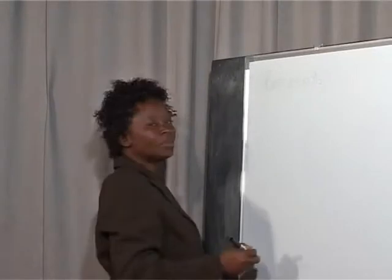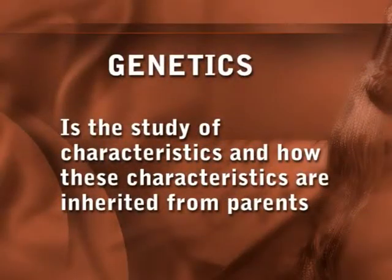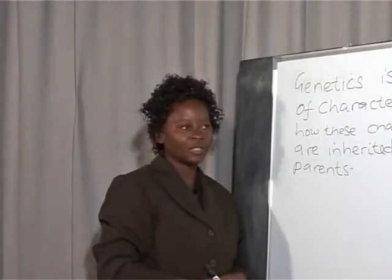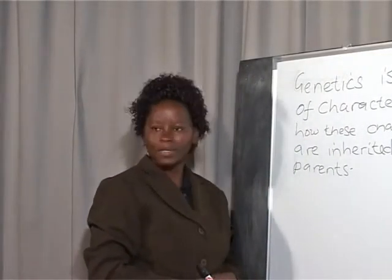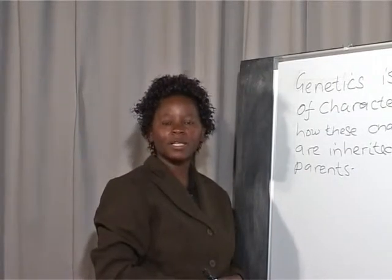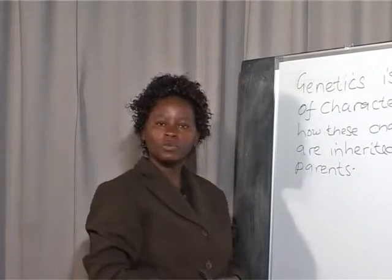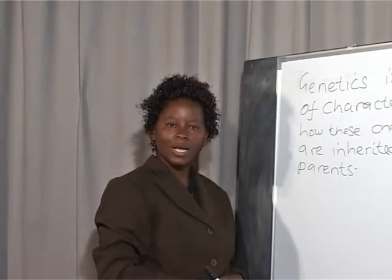So the study of these characteristics and how they are inherited from their parents is known as genetics. Now let's go to the board and write the definition of genetics. Genetics is the study of characteristics and how these characteristics are inherited from parents. We are now going to deal with the component of genetics which is known as variation.